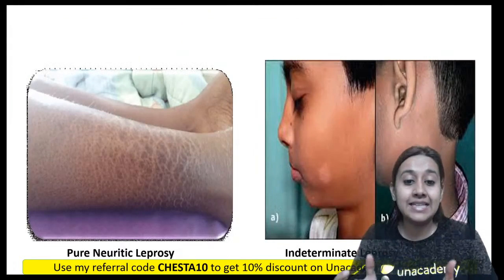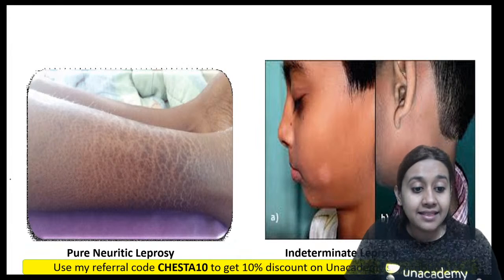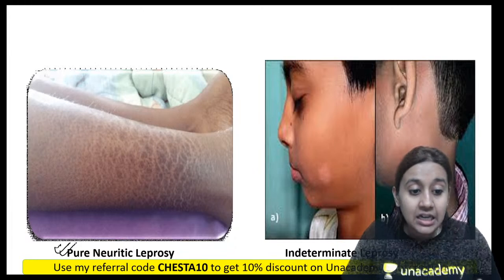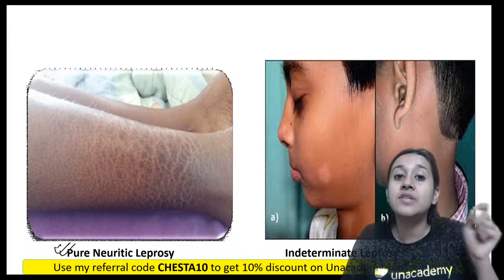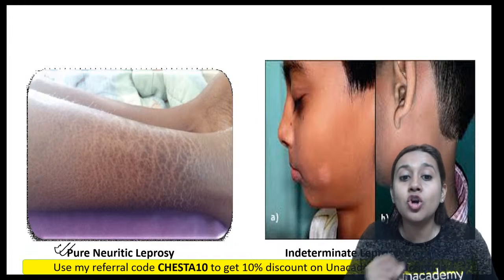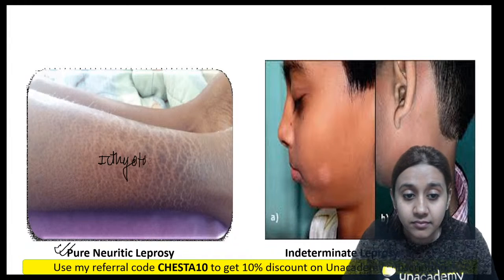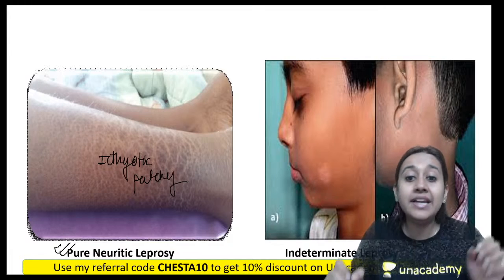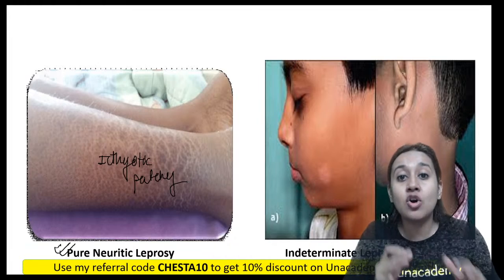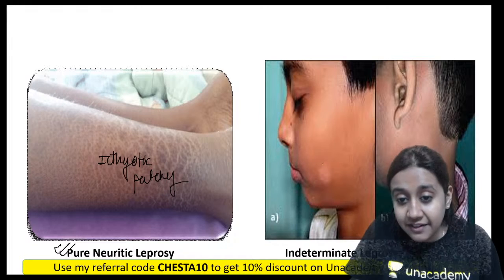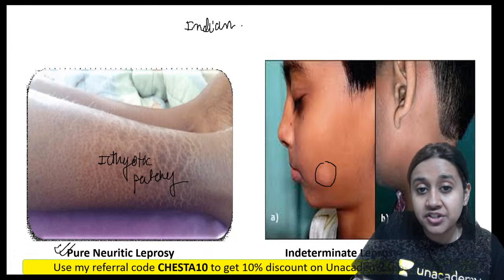There are important variants of leprosy. Pure neuritic leprosy presents with no cutaneous features — only nerves are involved. Due to autonomic nervous system involvement and loss of sweating, patients may have anhidrotic patches. Indeterminate leprosy, most frequently seen in children or family members of patients, presents with ill-defined plaques over the face. Both these types are present in the Indian classification system.